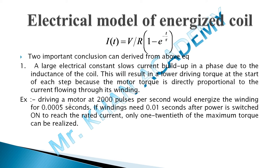For example, to drive a motor at 200 pulses per second — without an inductor this is achieved in 0.0005 seconds, but with the inductor-resistance circuit it takes 0.01 seconds. At 0.005 seconds after power switch-on, only 1/20th of maximum torque can be realized, meaning at that point you are getting only 100 pulses instead of 200. This is the drawback: a reduction in torque.